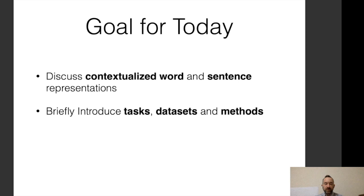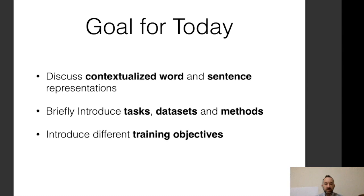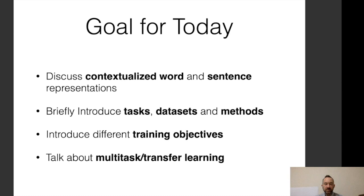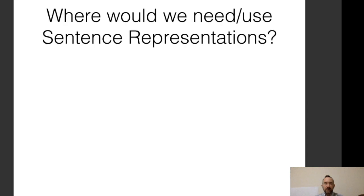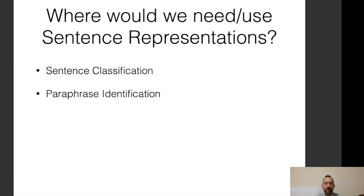I will briefly introduce tasks, datasets, and methods for training these and introduce different training objectives. I'll also talk about multitask and transfer learning more generally. The first thing I'd like to talk about is tasks using sentence representations — where would we need or use these? Tasks include sentence classification, paraphrase identification, semantic similarity, entailment, and retrieval.